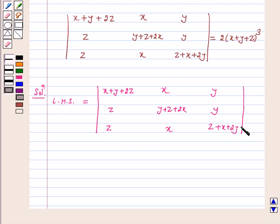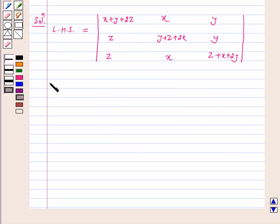Clearly we can see that if we operate c1 goes to c1 plus c2 plus c3, then we will be able to solve this question. By applying c1 goes to c1 plus c2 plus c3 we get: